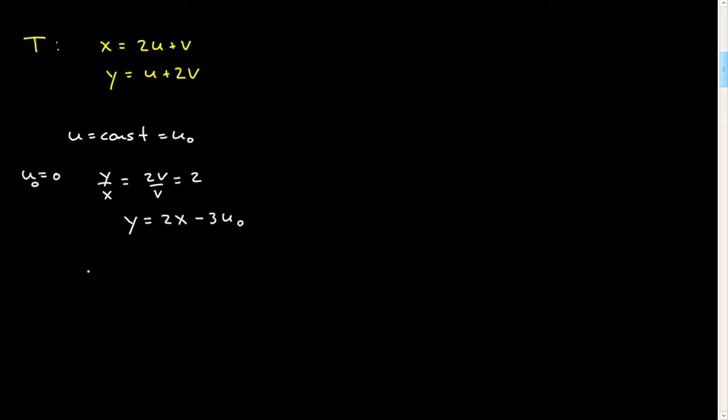I can also do the curves v is equal to a constant. And again, if you just set v-naught equal to zero, you can take the ratio of y over x in here, and you will get u over 2u, which will give you 1 half.